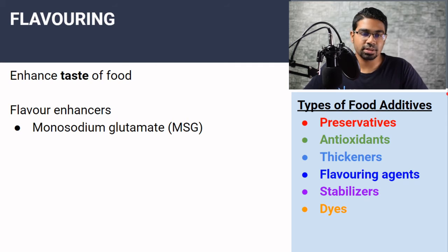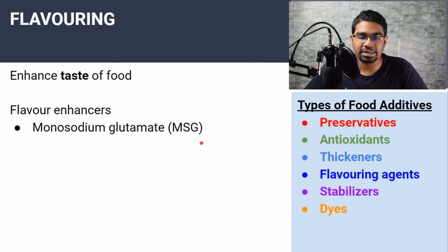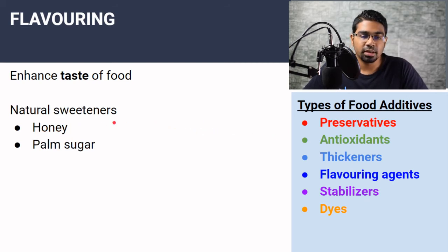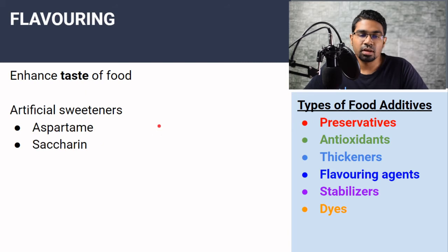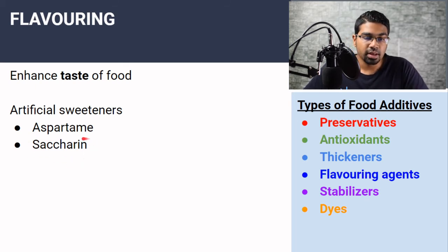Flavor enhancers, as the name suggests, enhance the flavor of food. The most common flavor enhancer is monosodium glutamate, also known as MSG. We also have sweeteners — natural sweeteners such as honey or palm sugar, and artificial sweeteners such as aspartame and saccharine. Saccharine has been banned in some countries because of possible health effects. Aspartame is also commonly used as an artificial sweetener.